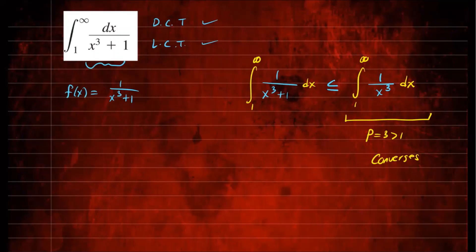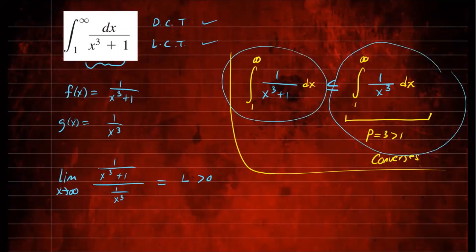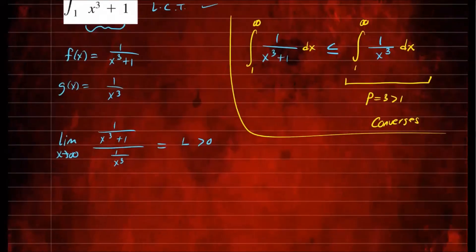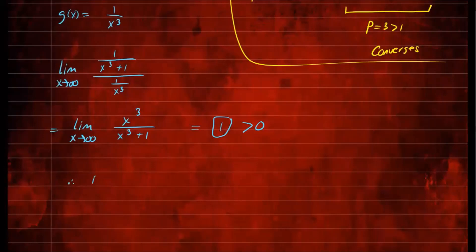Now let's do the limit comparison test. Our function g is 1 over x cubed. We take the limit as x approaches infinity of [1 over (x cubed plus 1)] divided by [1 over x cubed]. If this limit is some positive real number L, then since g converges, f must also converge — they behave the same. Simplifying the fraction, we get the limit as x approaches infinity of x cubed over (x cubed plus 1), and this limit is 1. So again we have a positive number, they behave the same. Therefore, by the limit comparison test, the integral from 1 to infinity of 1 over (1 plus x cubed) converges.